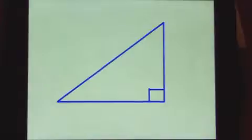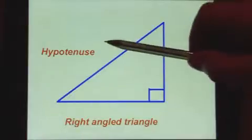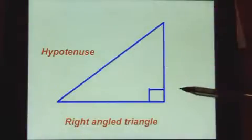Here's a right-angled triangle. The little square signifies that it is a right-angled triangle, 90 degrees. The side that's opposite the right angle is called the hypotenuse. It's the longest side of a right-angled triangle.